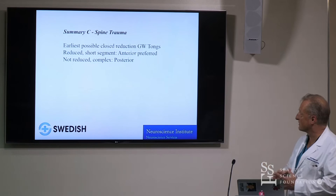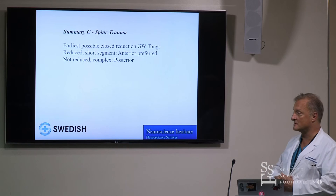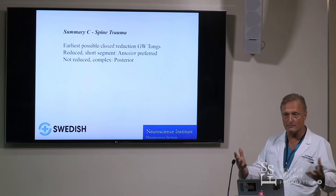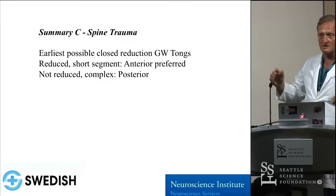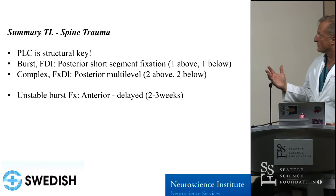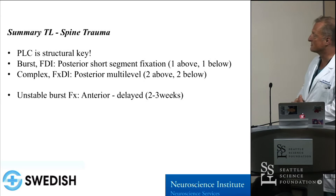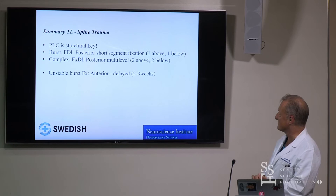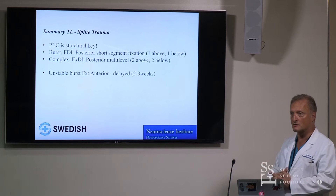Summary for C-spine trauma: I strongly suggest Gardner-Wells tongs — very affordable. For dislocations, put them into traction and get a reduction. For short-segment fixations, anterior is preferred. If there's a non-reduced fracture dislocation, posterior is the way to go. For the thoracolumbar spine, PLC integrity is key. For burst fractures and flexion distraction injuries, posterior short-segment fixation — one above, one below — is absolutely great. Complex fractures: two above, two below. For truly unstable burst fractures, delay anterior surgeries — don't do these acutely.